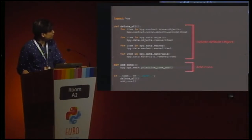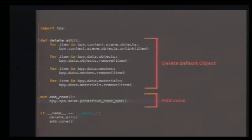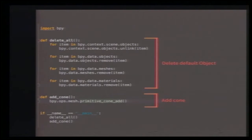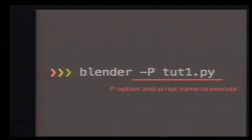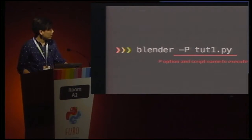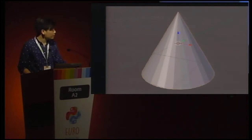This is a brief example of a Blender Python script. The script has two parts: the first part deletes the default objects. When you launch Blender, there are default objects in the center — a cube, camera, and light — so you have to delete them before doing your work. The second part does the actual job; this program simply adds a cone to the scene. To run your script in Blender, type: blender -P script_name in your terminal, and a cone will appear.